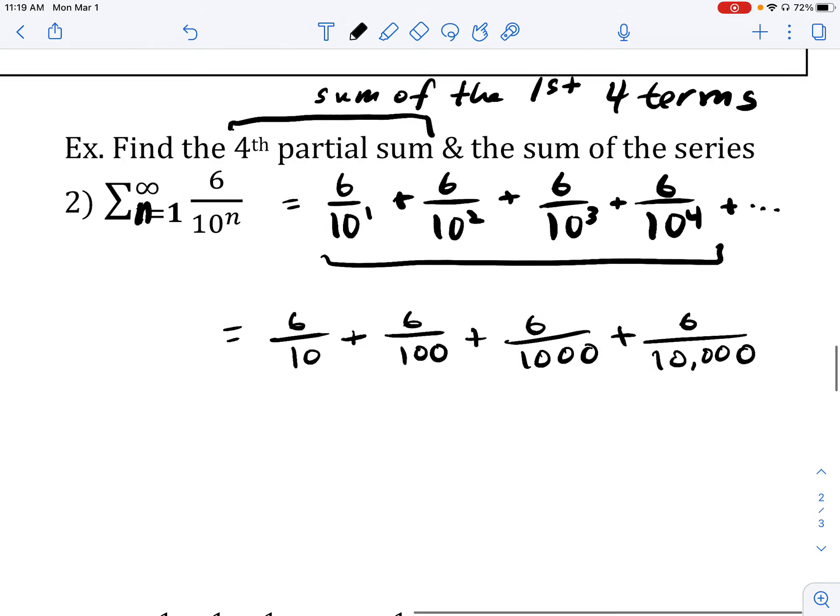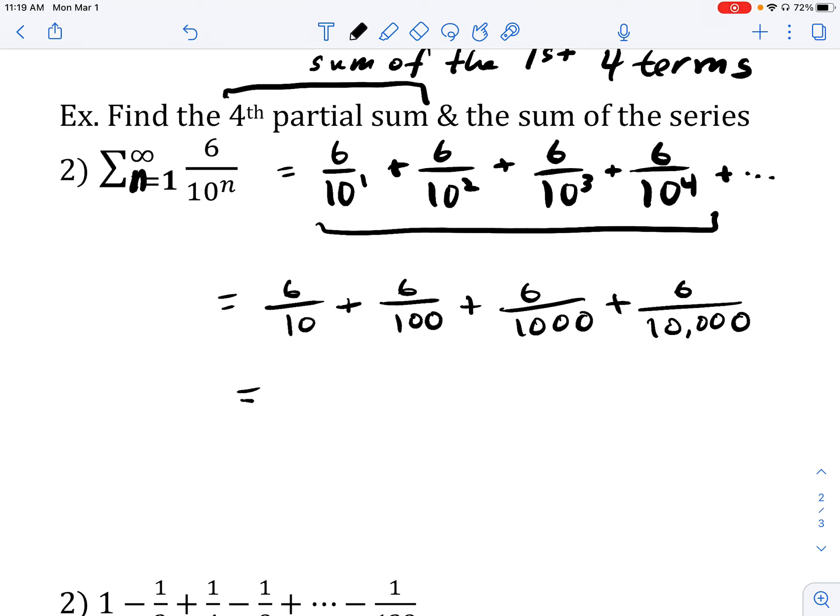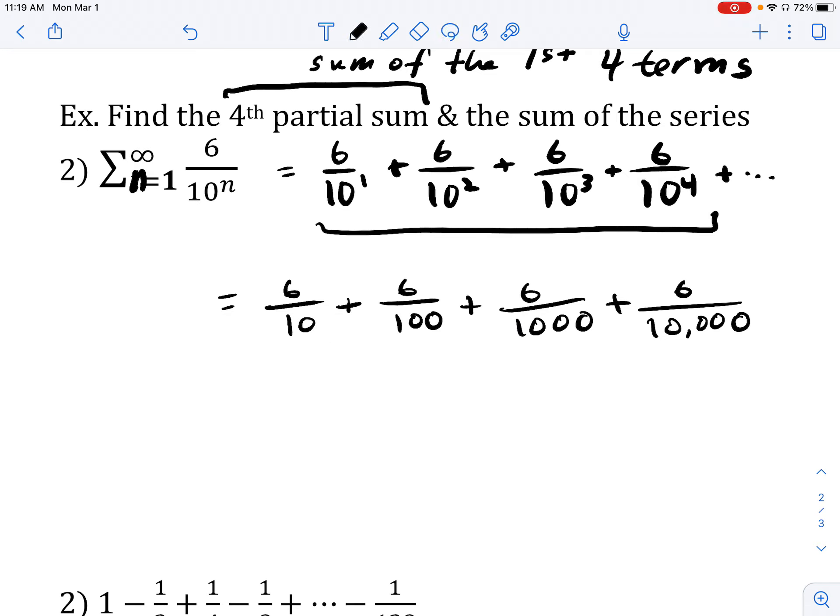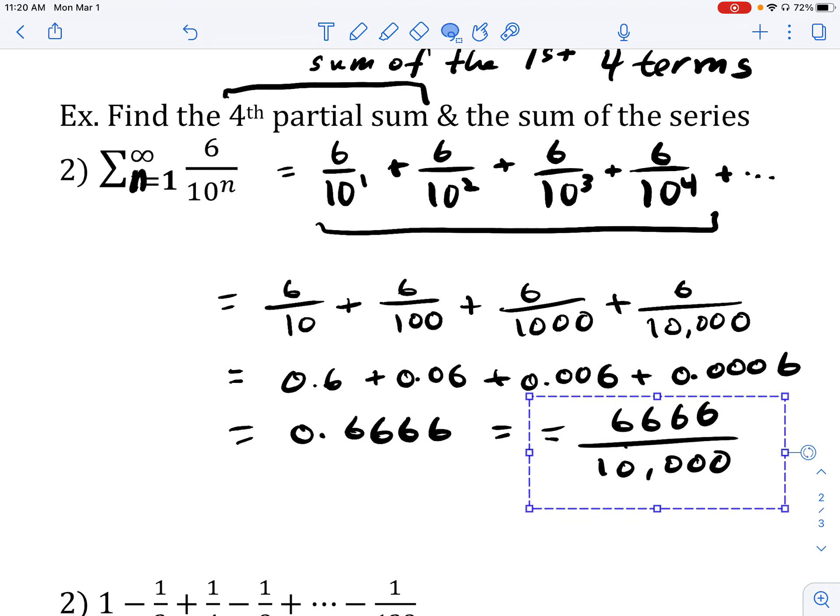So this could be written as 6 over 10 plus 6 over 100, 6 over 1,000 plus 6 over 10,000. Now, you could go ahead and try to add these all up so that they have the same denominator. But something that I want to highlight here, if I were to actually write each of these fractions in decimal form, what would that look like? Well, 6 over 10 is just 0.6 or 6 tenths. 6 over 100 is 6 hundredths. This would be 6 thousandths and 6 ten thousandths. If I add all those up, you could see that it would just give me the following sum, which is equal to this value here.